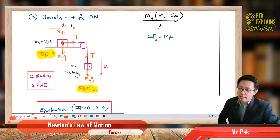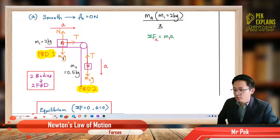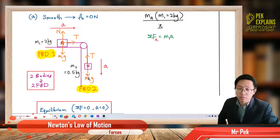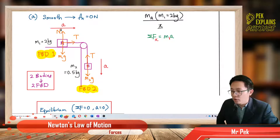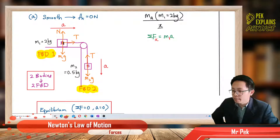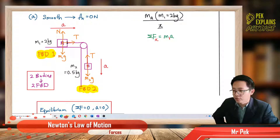Show all the forces acting on the object. For object A, it has the weight going down — M1g. Don't just write Mg, please write M1g, because A and B have different masses. Put A as M1 and B as M2. So this one M1g and this one M2g. A has M1g and has the normal force going up, perpendicular to the surface. A is being pulled by B, so A feels the tension in the string — tension to the right.